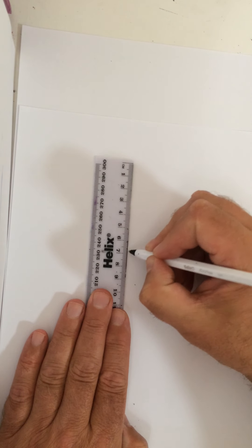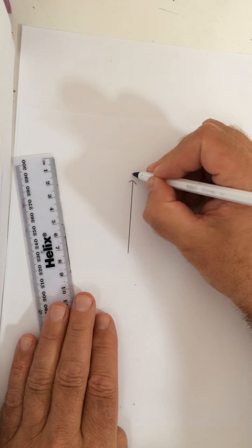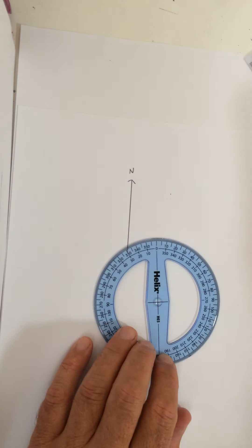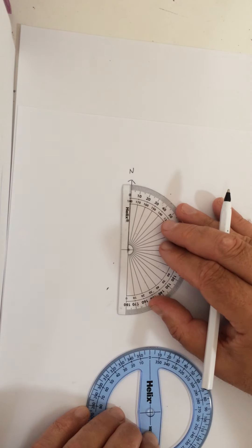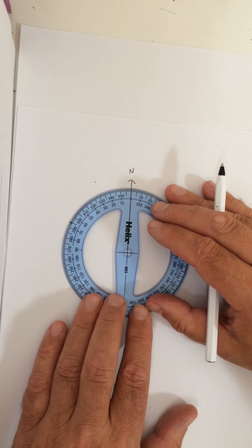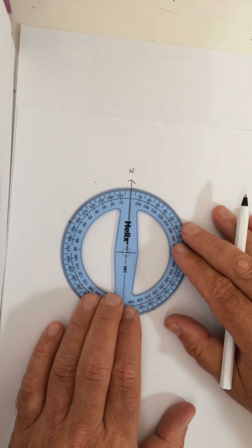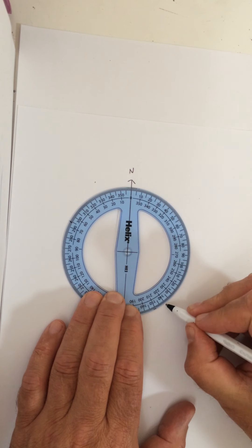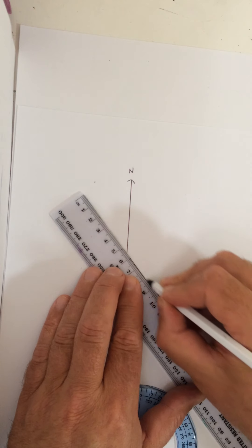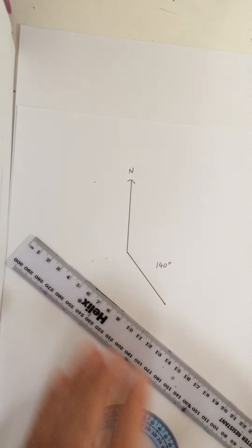So for example, we've already drawn a bearing of 25 degrees. If I want to draw a bearing, let me just get my north. I'm going to use my 360 protractor. You can see, going up to zero here, zero on the top. The line going to the north goes through the zero. So if I wanted to draw a bearing of 140 degrees, I would mark on that, join them up. And that would be my bearing, 140 degrees.